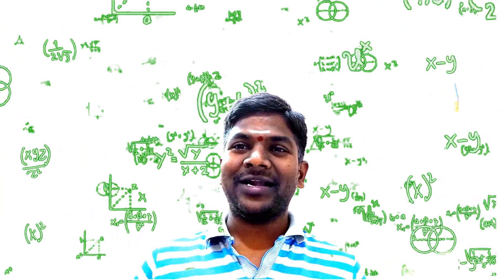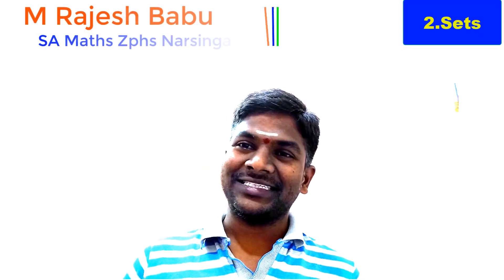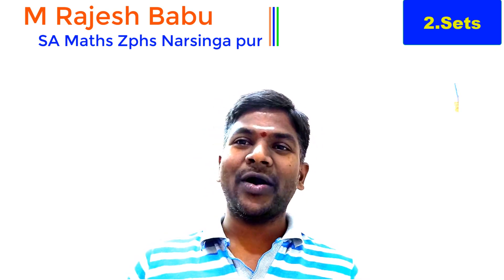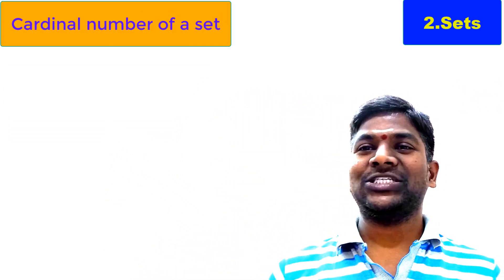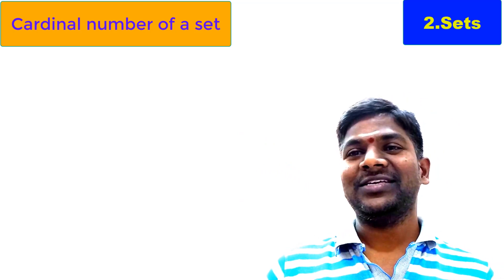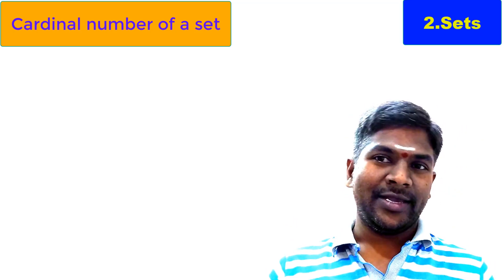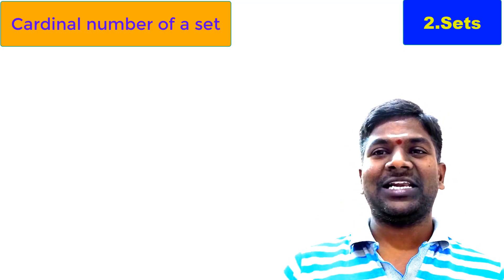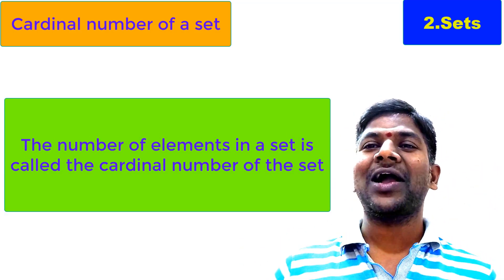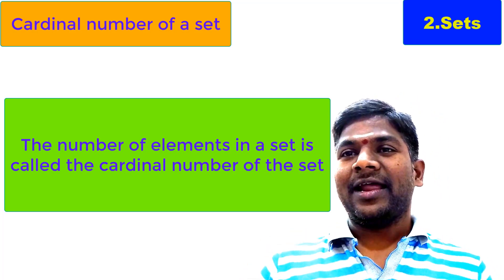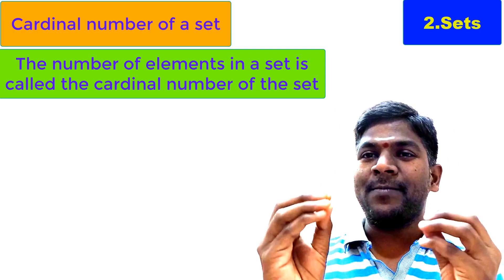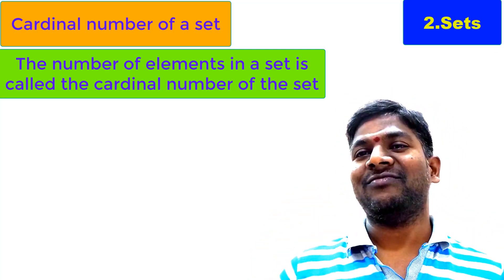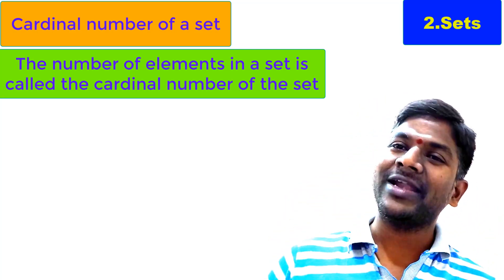Hi viewers and students, as part of our discussion in the chapter on sets, let us discuss a new concept: the cardinality of the set, or the cardinal number of the set. The number of elements in the set is called the cardinal number of the set. When we count the elements in the set, the number we get is called the number of elements of that set, and that number is called the cardinal number of the set.